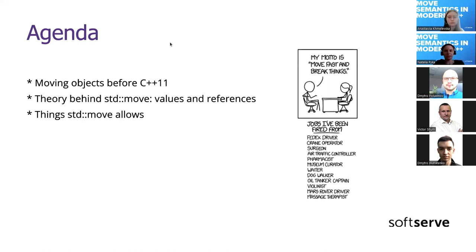The agenda for today is: telling a bit about moving or evading copying objects before modern C++ times; a short theory behind standard move, values, and references; some things standard move allows us to do; and maybe if we have some time left, we will talk about perfect forwarding as well.